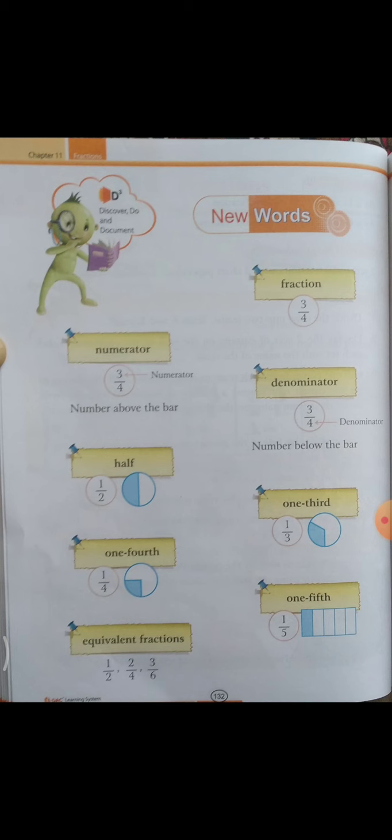Koi bhi value — 1 by 2, 2 by 2, 3 by 7, 5 by 10 — is form mein diye ho usko kya bolte hain? Fraction. Ab fraction ke andar do values hoti hain: numerator and denominator. Toh numerator jo upar wali value hoti hai usko bolte hain numerator, aur neeche wali value ko denominator.